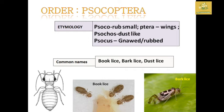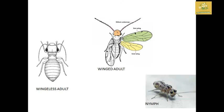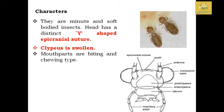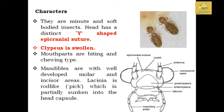Diagrammatic images of winged adults, wingless adults, and nymphs of Psocoptera are shown here. Regarding their characteristics, they are minute and soft-bodied. The head is distinct with a Y-shaped epicranial suture, and the clypeus is small. The mouthparts are of the biting and chewing type. The mandibles are well-developed with molar and incisor areas, and the lacinia is rod-like, used for picking, and is partially sunken into the head capsule.